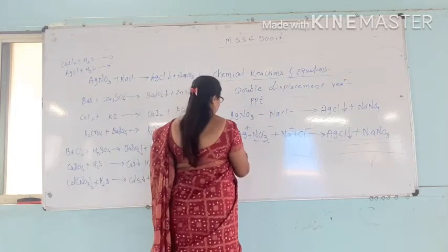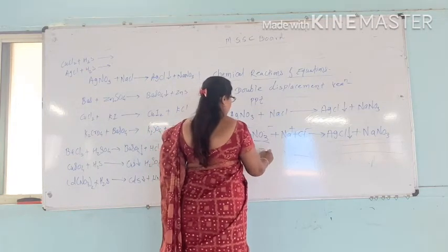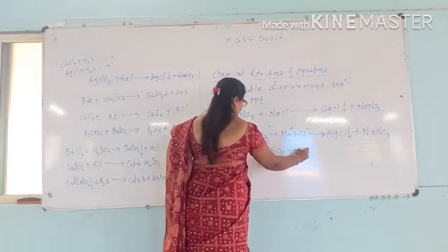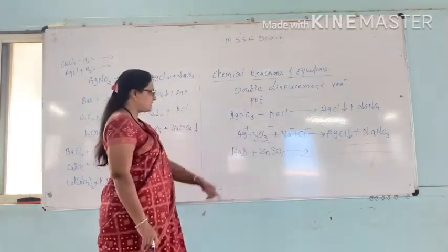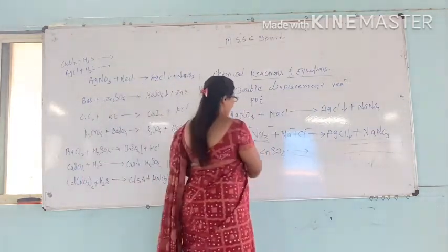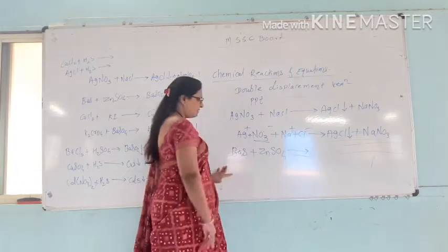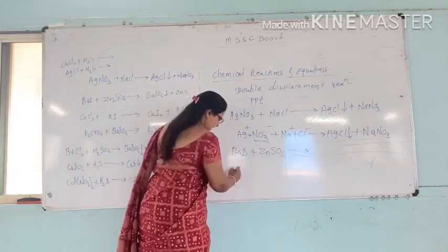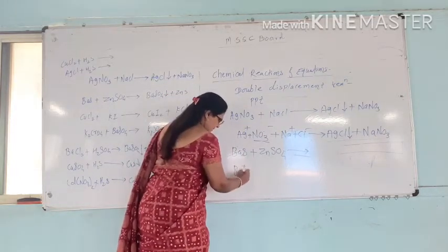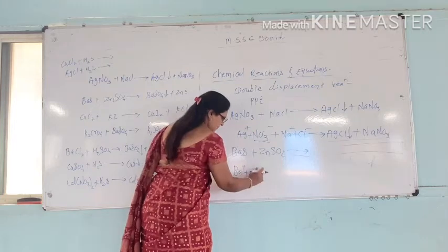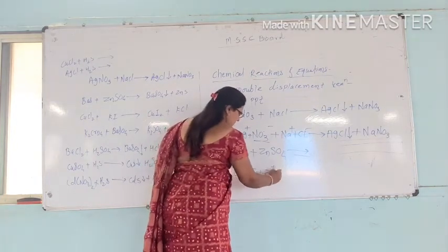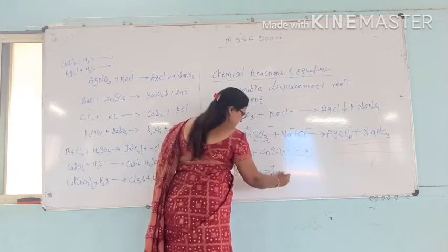What is the next reaction? Barium sulfide reacts with zinc sulfate. In this reaction, if you have the ion exchange: barium positive ion plus sulfide ion, plus zinc positive ion plus sulfate ion.